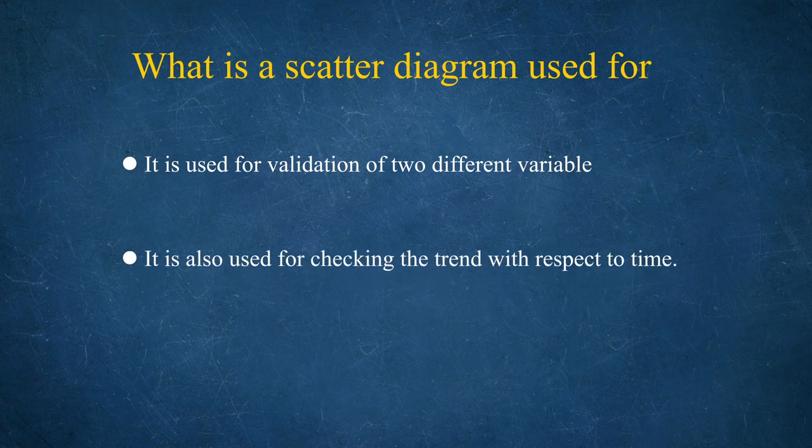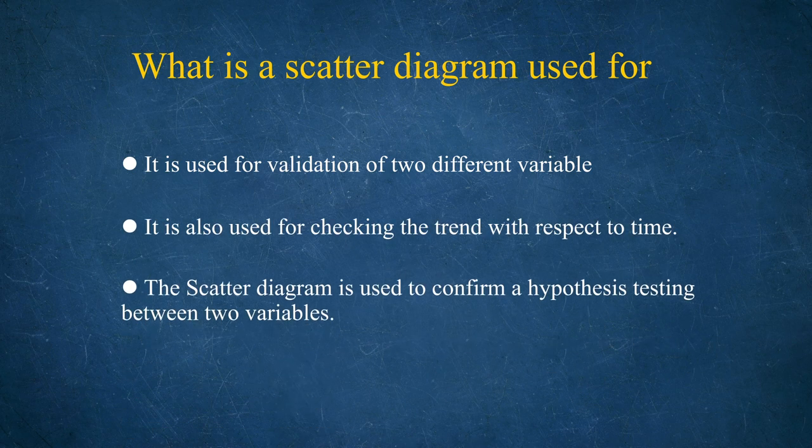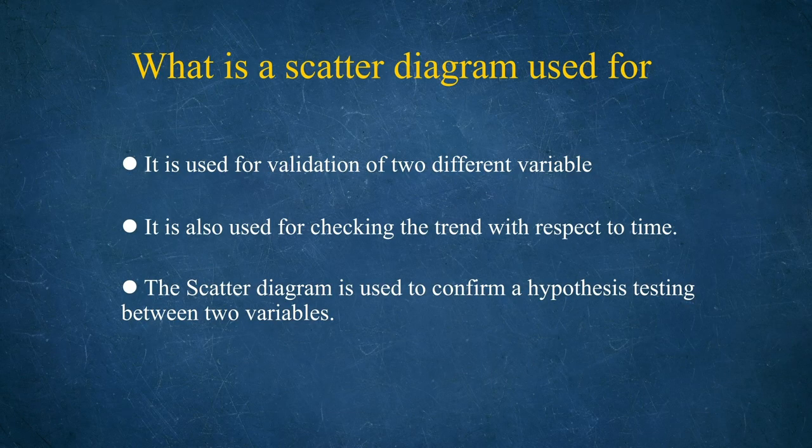The scatter diagram is used for validation of two different variables. It is also used for checking the trend with respect to time. The scatter diagram is used to confirm hypothesis testing between two variables. We have discussed null hypotheses, accepted hypotheses, and alternative hypotheses in a previous session. As far as two variables are concerned, the scatter diagram plays a very vital role in checking trends and variable validation.